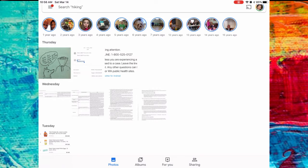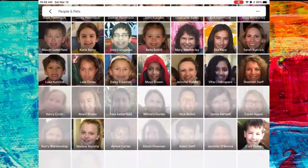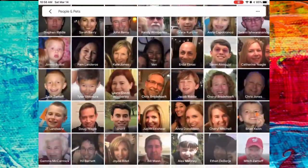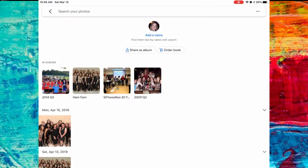If you name those groups, which you can do through the search screen, just click on the people, click a group and select add a name, you can search by a person's name.